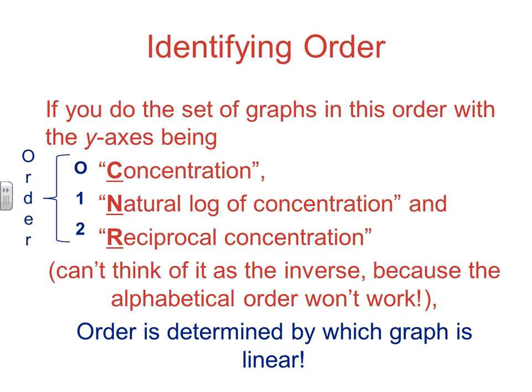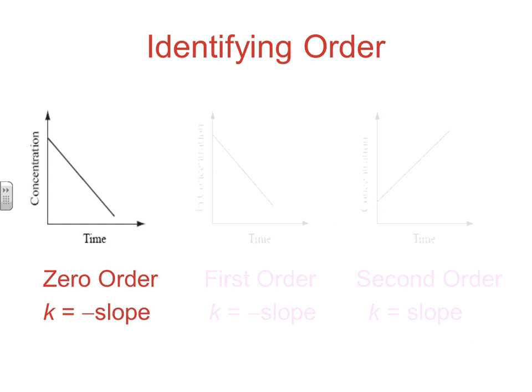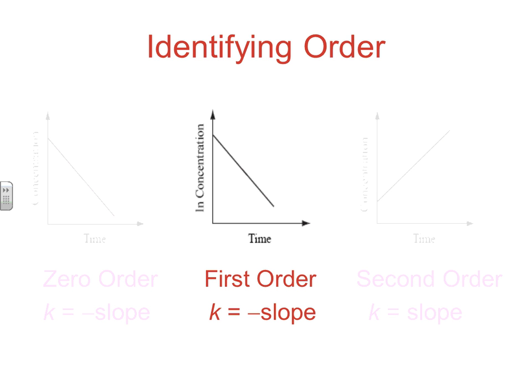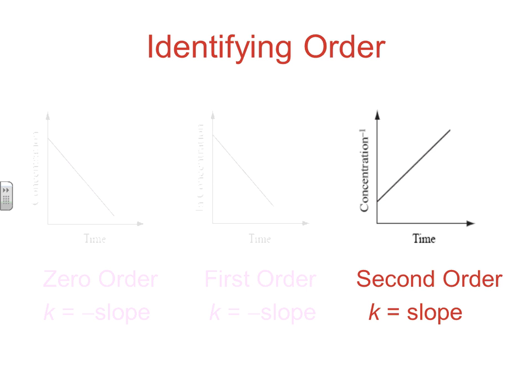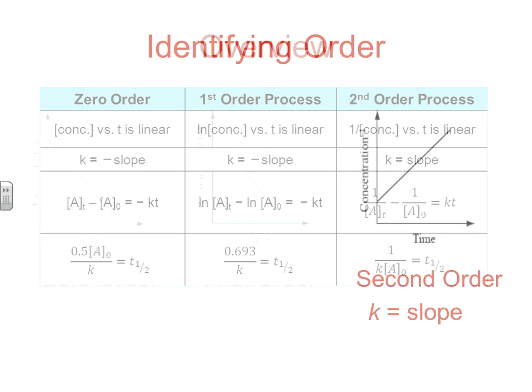Once we've established which graph is linear, there are other things we can do. If it's the concentration graph that's linear, it's zero order and k equals the negative slope. If it's the natural log graph that's linear, it's first order and k equals the negative slope. If it's the reciprocal versus time that's linear, it's second order and k equals the slope. So we can determine the order and find k from the slope of the linear line.